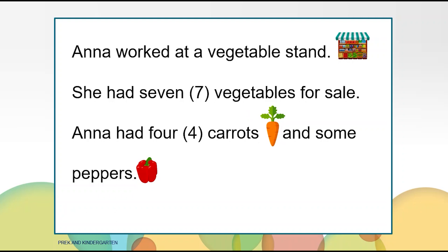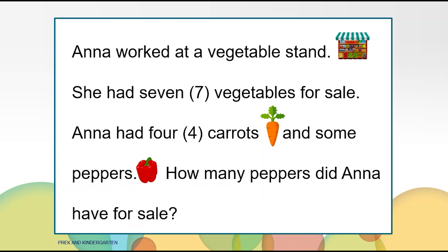Anna worked at a vegetable stand. She had seven vegetables for sale. Anna had four carrots and some peppers. What new information did we find out? She had four carrots. We have a question: we get to figure out how many peppers did Anna have for sale.